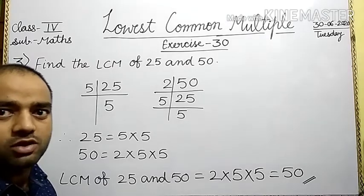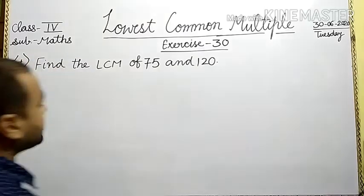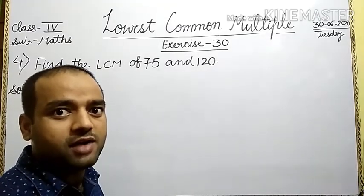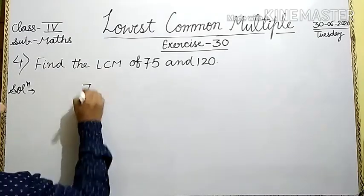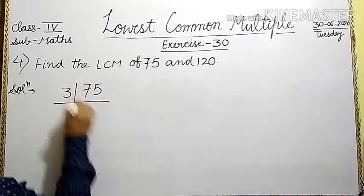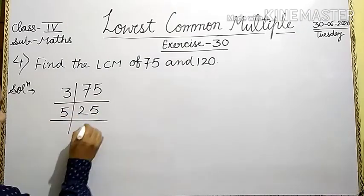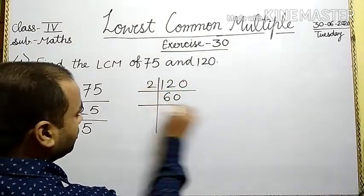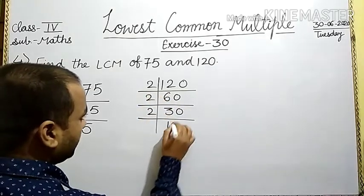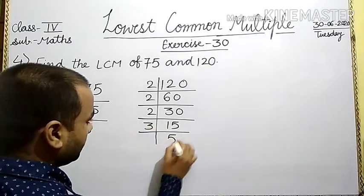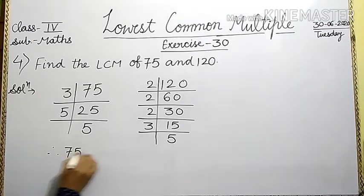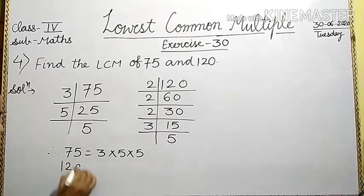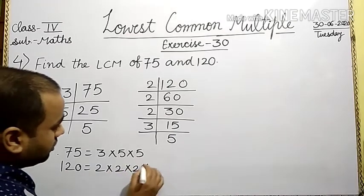Now, let us discuss question number 4. In question number 4, find the LCM of 75 and 120. First of all, we find the prime factors of 75 and 120. For 75: 3 times 25 is 75, then 5 times 5 is 25. For 120: 2 times 60, 2 times 30, 2 times 15, 3 times 5. Therefore, 75 is equal to 3 into 5 into 5. And 120 is equal to 2 into 2 into 2 into 3 into 5. Is it clear?